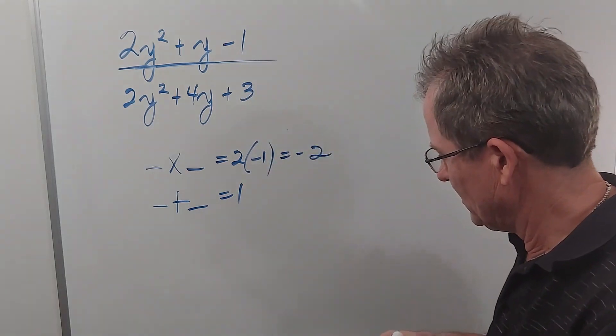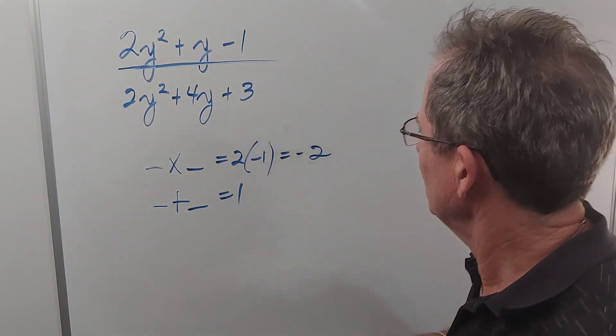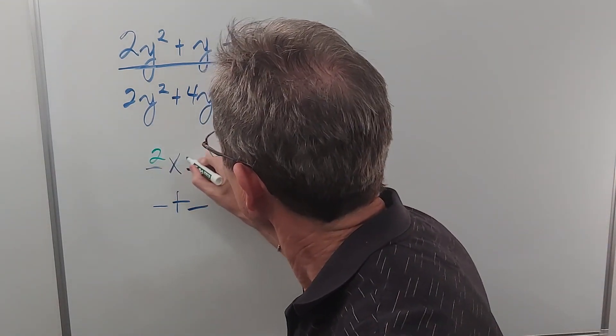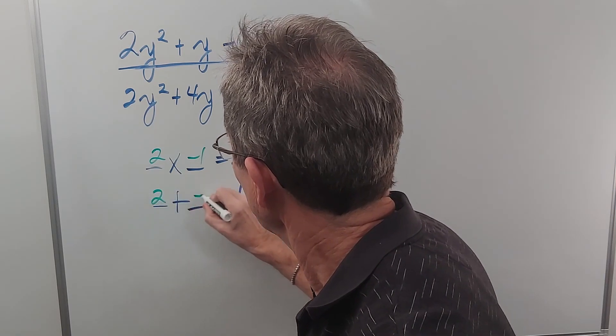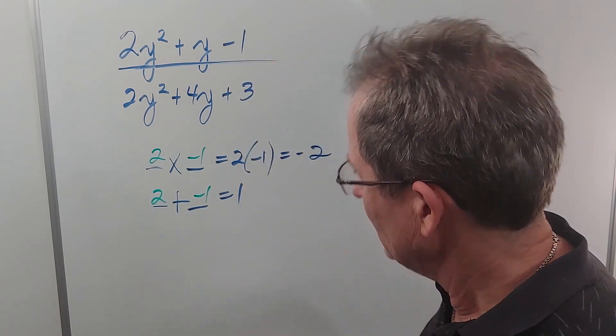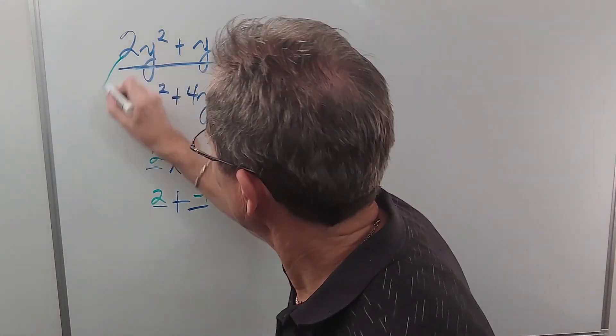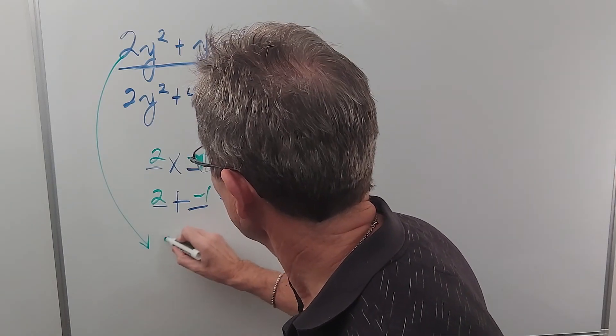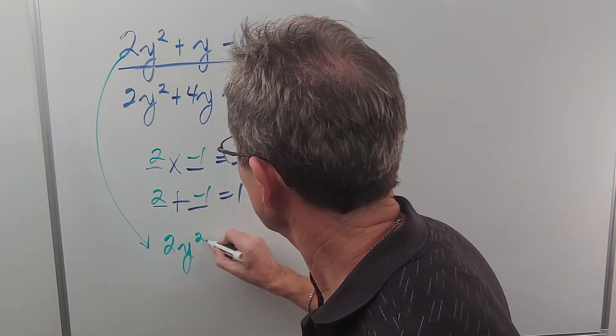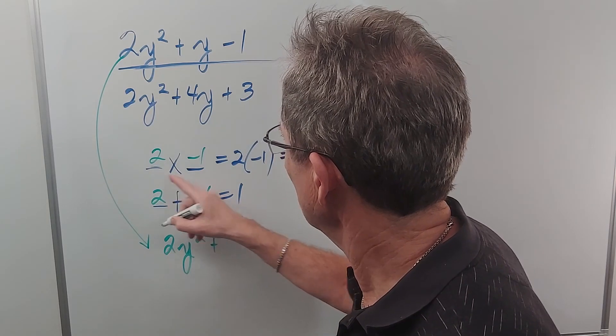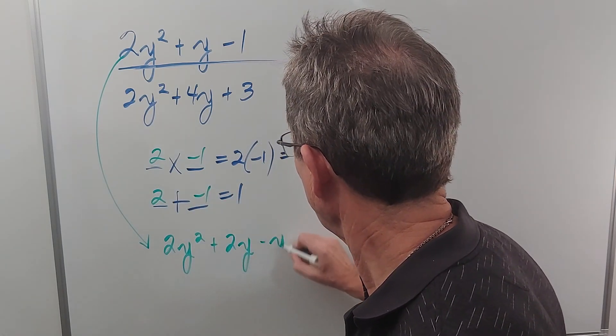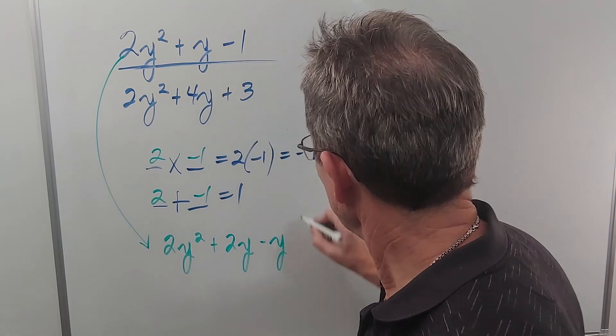You can probably see pretty quickly that the two numbers are 2 and negative 1. So then we take this complex trinomial and rewrite it as 2y² + 2y - y - 1.